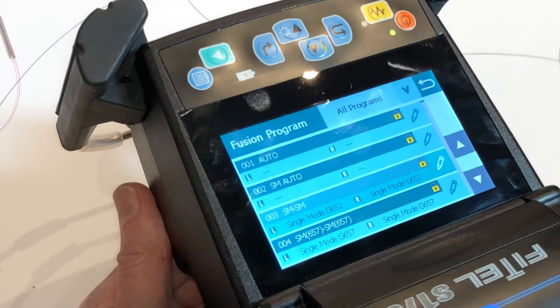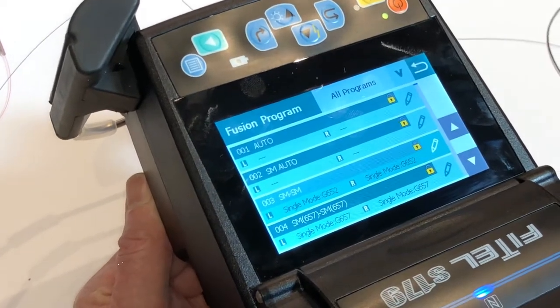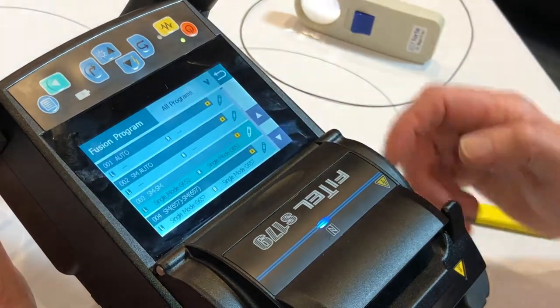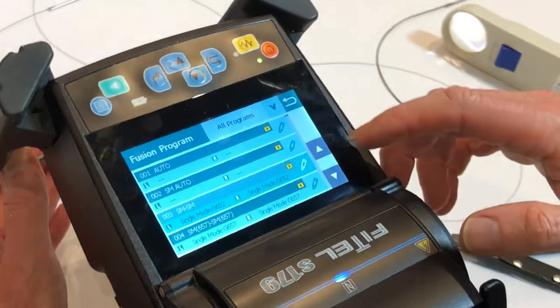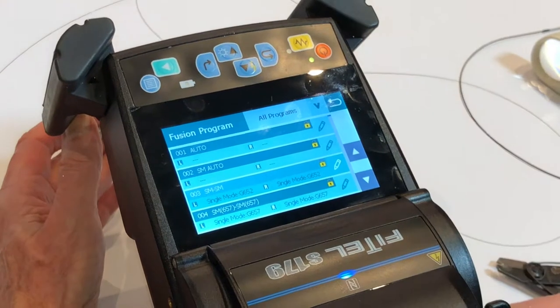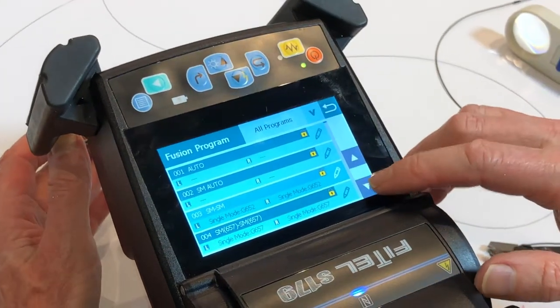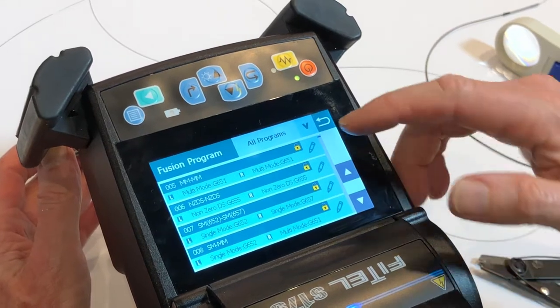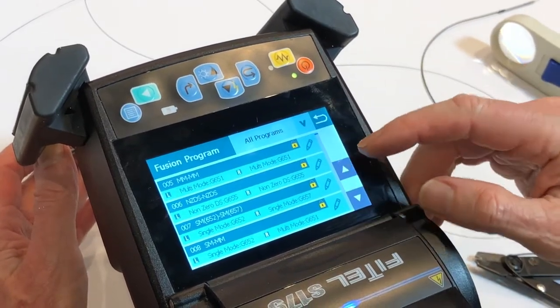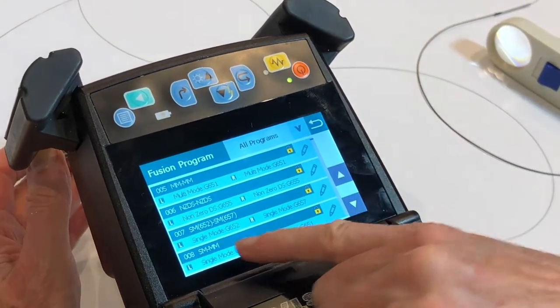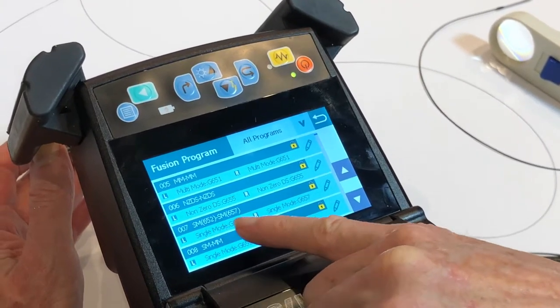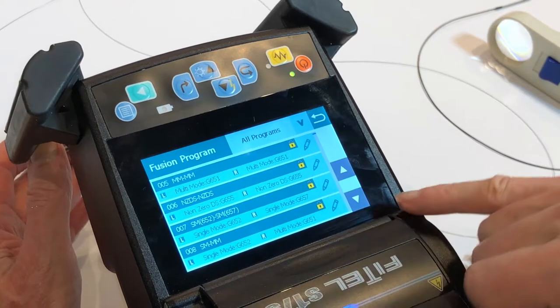If you're not sure what fiber you've got, how do you find out? In dissimilar fiber splicing, it depends on the type. We have a huge range. We'll just scroll down through here. You can see we've got 652 to 657, so there's your standard single-mode to bending sensitive single-mode.